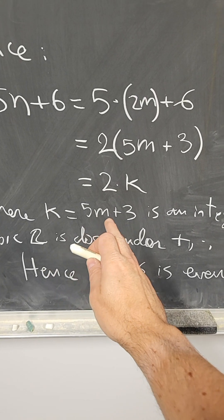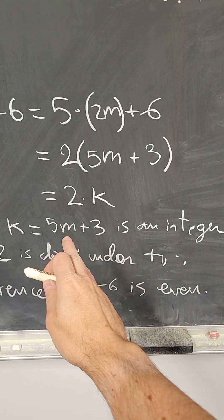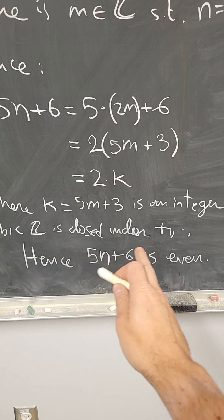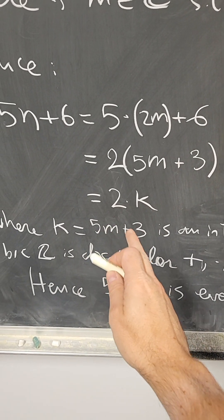And I can rewrite that as twice times 5m plus 3. I'm going to call that k, and k, 5m plus 3, since m is an integer, 5 and 3 are integers, and the integers are closed under addition and multiplication.